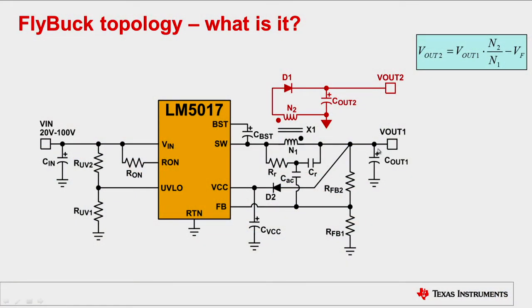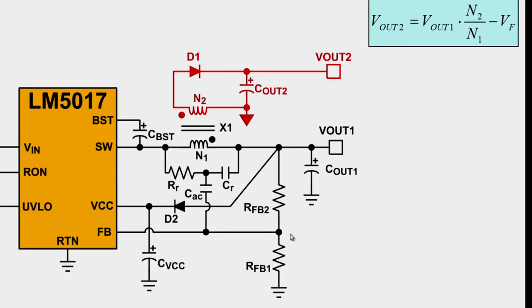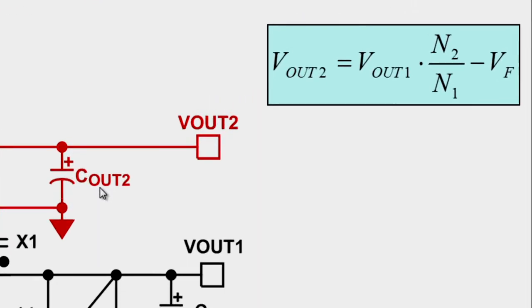The FlyBuck Topology is essentially a synchronous buck converter where the primary inductor has been replaced with a coupled inductor. The primary output voltage is dependent on the feedback resistor divider, just like in a buck converter, and the secondary output is created by rectifying the secondary winding waveform with the help of a diode D1 and the capacitor Cout2.